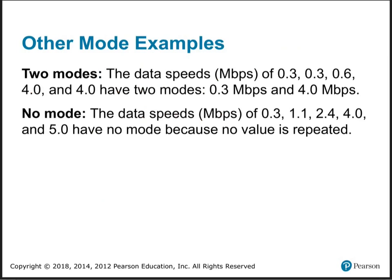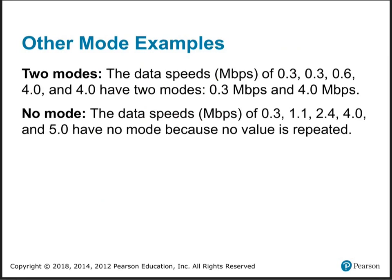Sometimes you can have two modes — bimodal data. If two data values are tied for occurring the most, you just list them both. You could also have no mode if no number repeats. You probably wouldn't even use mode on those kinds of data sets — you'd mainly use it for things like shoe sizes and hat sizes.